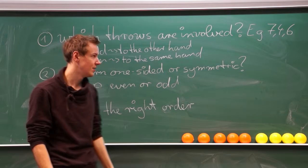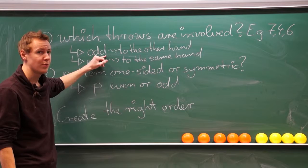So if you have a throw that goes to the other hand, it is an odd throw. If it's a throw that goes to the same hand, you have an even throw.